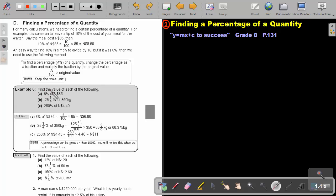Okay, let's look at example 6. Find the value of each of the following. 8% of 85. So I will just say 8 over 100 times 85, and that will be 6 Namibian dollar and 80 cents. Or if I say 25 and a quarter percent of 350 kilogram. Now, I can just leave it like this. Say 25 and a quarter out of 100 times 350. And you can just press it on the calculator. You can make it an improper fraction by saying 25 times 4. That will be 100 plus 1. It's 101.